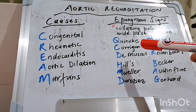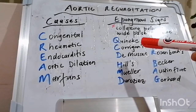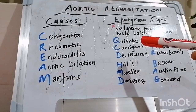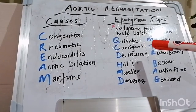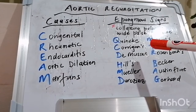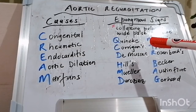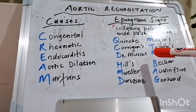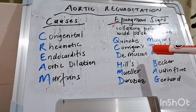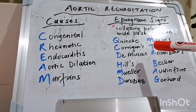Hill's sign refers to increased blood pressure of at least more than 20 mmHg in the legs compared with the arms. This is further subdivided into mild, moderate, and severe: severe being a difference of more than 60 mmHg, moderate being a difference between 20 and 40 mmHg, and mild being at least 20 mmHg higher in the legs compared with the arms.